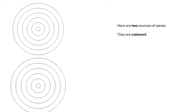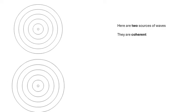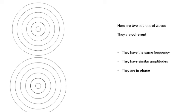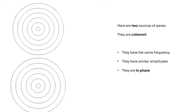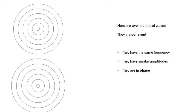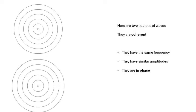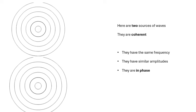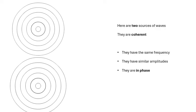Now, what's going to happen if there are two sources of waves — two point sources? These sources are coherent. What does that mean? You need to learn this. If two sources are coherent, then they have the same frequency, they have similar amplitudes — it doesn't have to be exactly the same, but similar amplitudes — and they are in phase. So they're producing waves together, going up and down together. The waves leaving the sources are in phase as well. These are two coherent sources, and be able to say what that means.